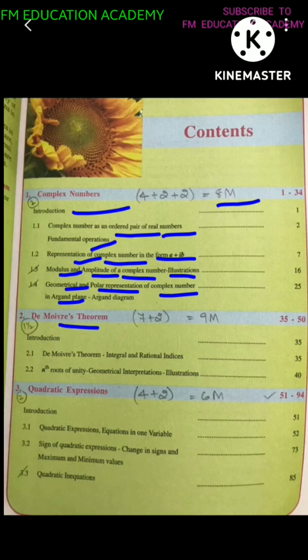Then second chapter is DeMoivre's theorem for 9 marks. DeMoivre's theorem, integral and rational indices, nth root of unity, geometrical interpretation and illustrations.